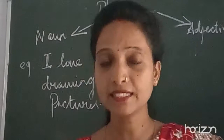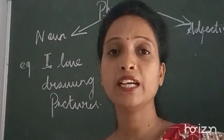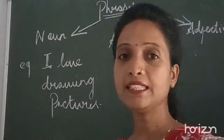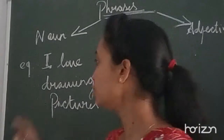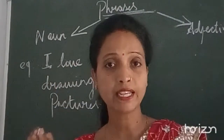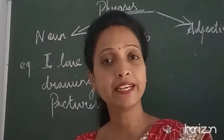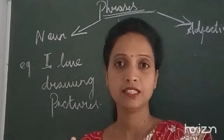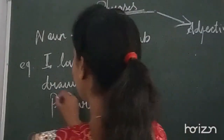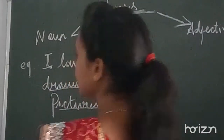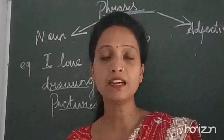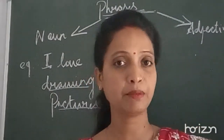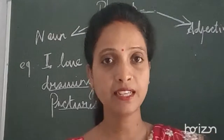Ask 'what I love' to the sentence. The answer you get is the noun phrase. What I love — the answer is 'drawing pictures.' Drawing pictures becomes your noun phrase because you are getting the answer to 'what' here.